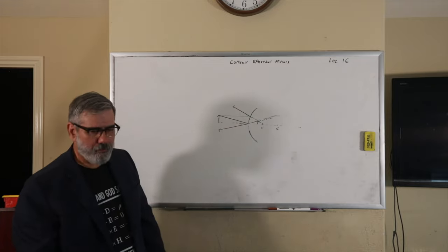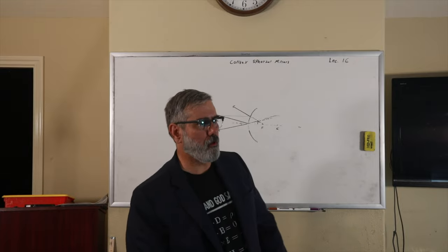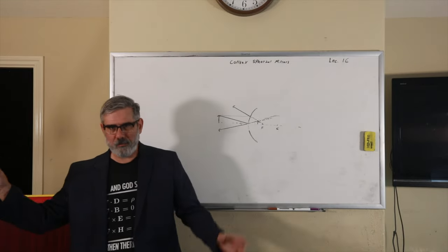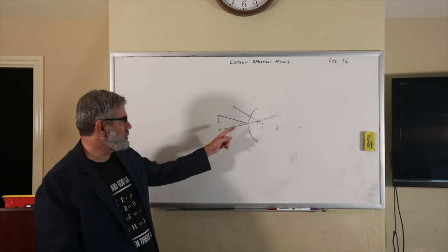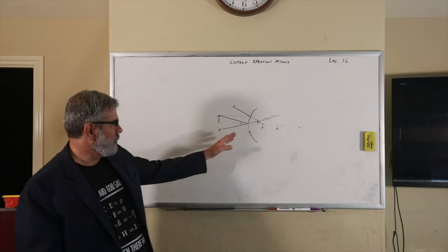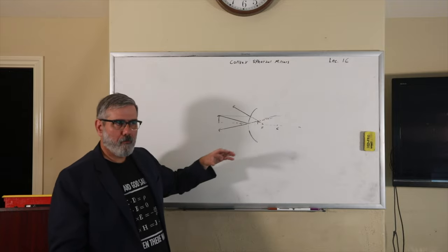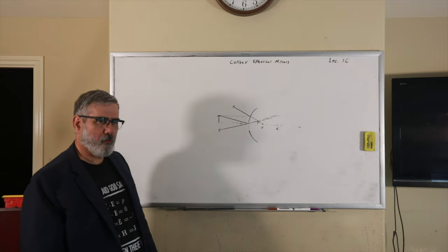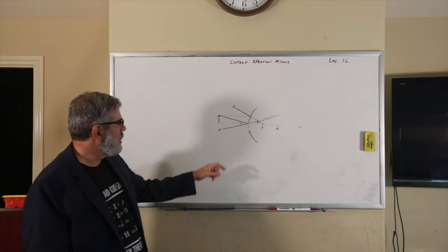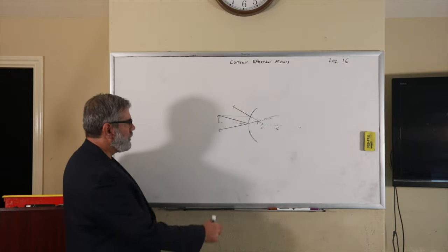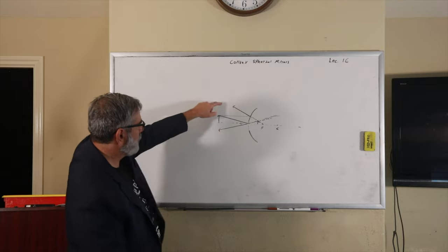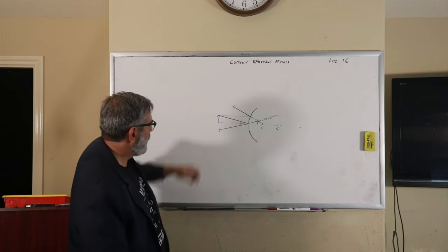But if you've ever been in a car and looked at the rear view mirror and you see it say something like 'objects in mirror are closer than they appear,' this is why. Because your rear view mirror, the side mirrors on a car, are actually convex mirrors, convex spherical mirrors. And they're used because we can reverse this and think of rays coming in from this direction.